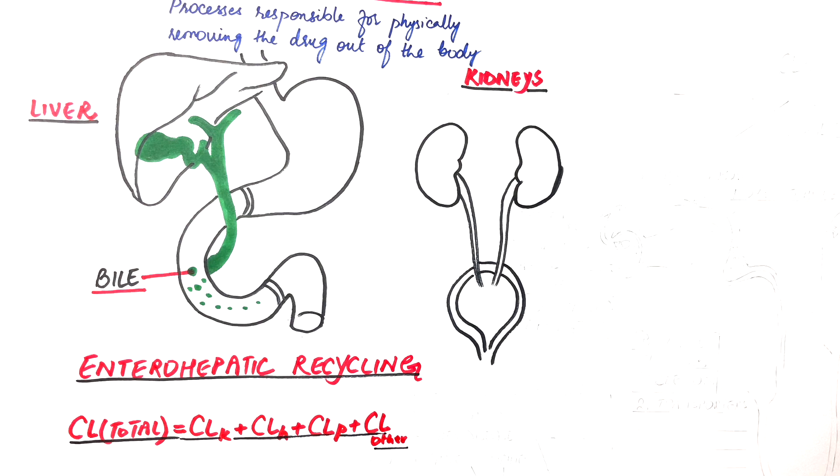Since the kidney is the primary organ responsible for elimination of the drug, in this video we will look into the excretion of drugs through the kidneys only. If you haven't watched my previous videos on pharmacokinetics, please make sure to watch them first so that you have an in-depth understanding of today's topic.